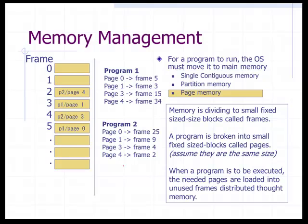Page memory management handles this problem by taking a program and breaking it up into pages, then assigning those pages into frames. These frames are referenced to particular locations in main memory. When a program is executed, the needed pages are loaded into unused frames and distributed throughout main memory — for example, program one, page three, is in frame 15, and program two, page four, is in frame two. The operating system's job is to manage where all the pages are.